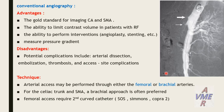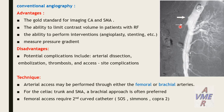Conventional angiography is the gold standard for imaging the celiac trunk and superior mesenteric artery. Its advantages include the ability to limit contrast volume in patients with renal failure, the ability to perform intra-arterial interventions, angioplasty, and stenting. It also measures pressure gradients. Disadvantages include potential complications including arterial dissection, embolization, thrombosis, and access site complications. In this picture, we see a catheter from the femoral approach showing occlusion of both the celiac trunk and superior mesenteric artery.